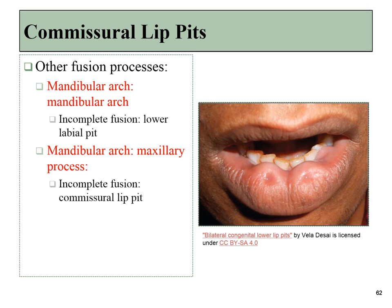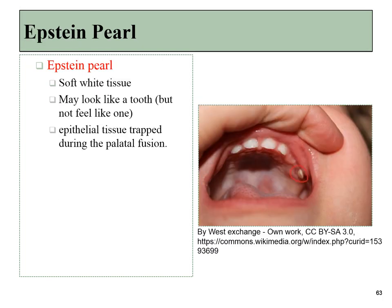If the mandibular arches do not fuse completely, this can lead to a labial pit. Labial pits can also form at the commissures, where the maxillary processes grew off of the mandibular arch. An Epstein pearl can develop when fusion is not complete. Ectodermal cells had to migrate to the surface, and if they get trapped in the middle of a bunch of mesenchyme, that's what forms an Epstein pearl — trapped epithelial cells deeper in the oral mucosa. It may look like a tooth, being whitish in appearance, but being epithelial it will be soft and squishy.